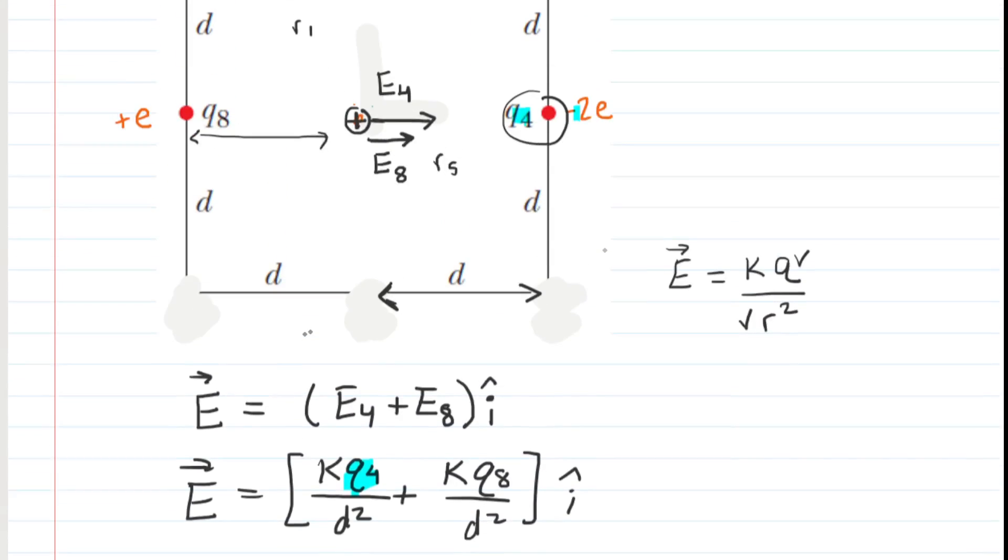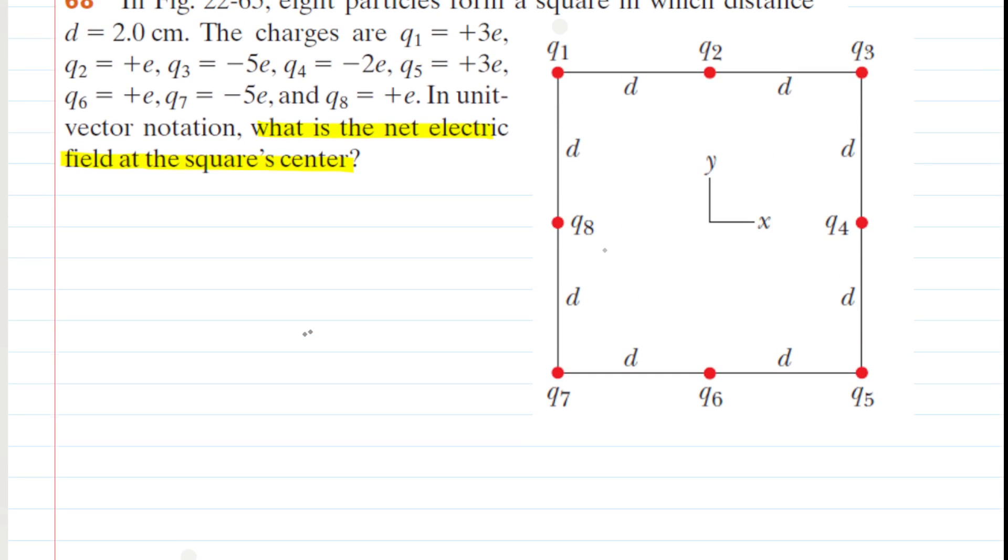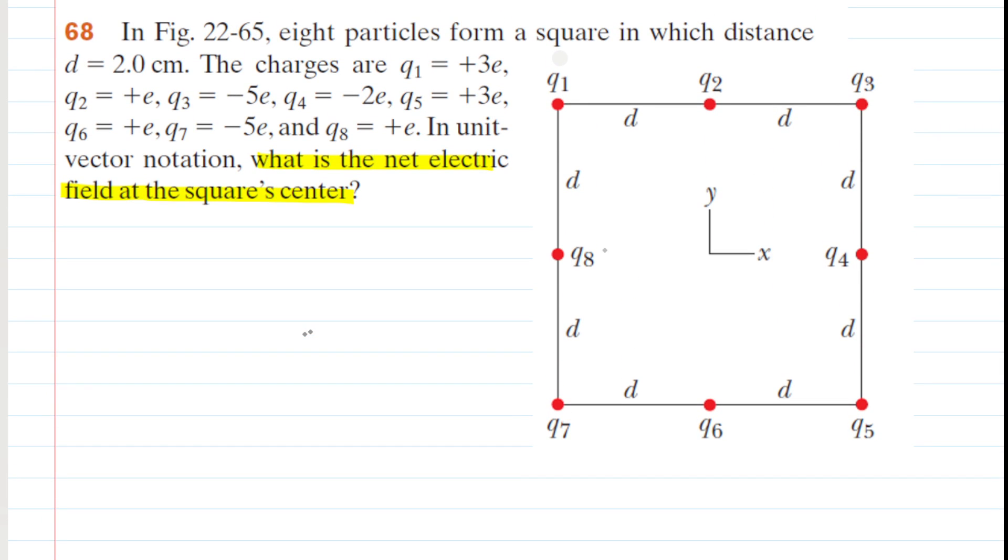So sometimes in these electric field problems, when you have an array of charges, you might look for some symmetry effects that might allow you to cancel out the electric field contributions from some of those charges. In this case, it greatly simplified our solution.